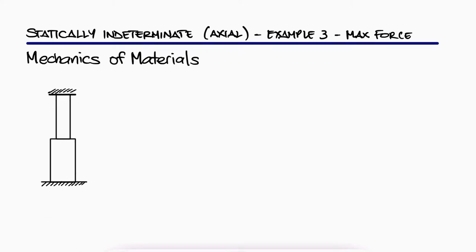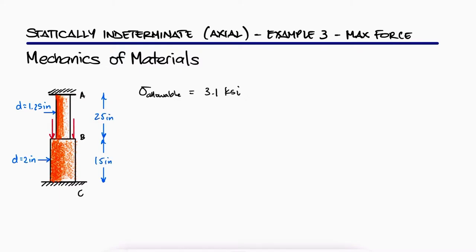A polystyrene rod consisting of two cylindrical portions AB and BC that has a maximum allowable normal stress of 3.1 KSI is restrained at both ends and will be subjected to two loads of P as shown. What are the maximum loads of P that can be applied without either section reaching the maximum allowable normal stress?